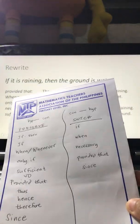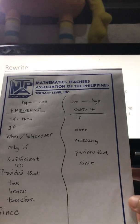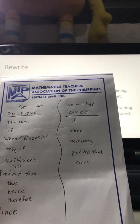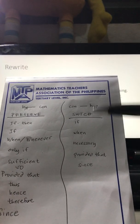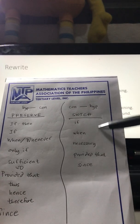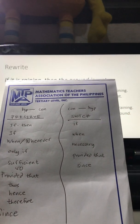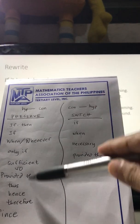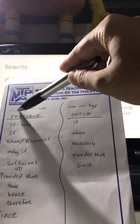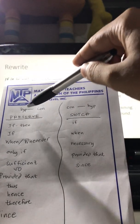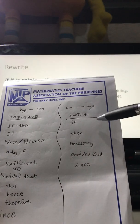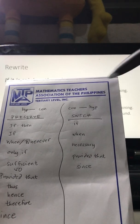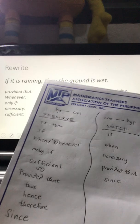Some of the connectives available here: whenever you want to preserve or switch the placements. As discussed in another video, when we say preserve, it means that connectives under this column place the hypothesis at the start of the statement and the conclusion at the latter part. Switch is the other way around — conclusion comes first before the hypothesis.